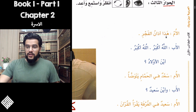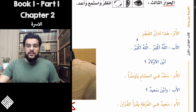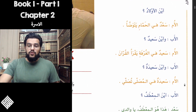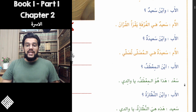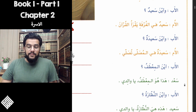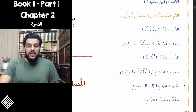So let me read the dialogue for you — listen and repeat after me. This is the third one. أين الأولاد؟ سعد في الحمام يتوضأ. وأين سعيد؟ سعيد في الغرفة يقرأ القرآن. وأين سعيدة؟ سعيدة في المصلى تصلي. أين المعطف؟ هذا هو المعطف يا والدي. وأين النظارة؟ هذه هي النظارة يا والدي. هيا بنا إلى المسجد. هيا بنا.